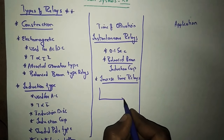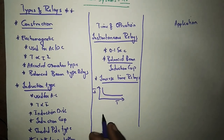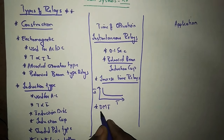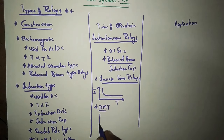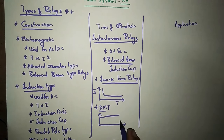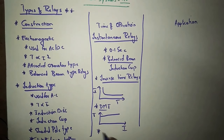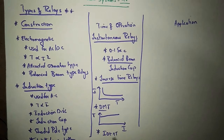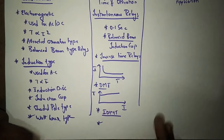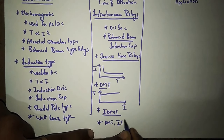Next comes inverse time relays. Inverse time relays are those where current and time are inversely proportional. Next comes DMT — definite minimum time interval — where for any magnitude of fault current, the operation time is constant. After that comes IDMT relays — inverse definite minimum time relays — which are a combination of definite minimum time relays and inverse time relays.